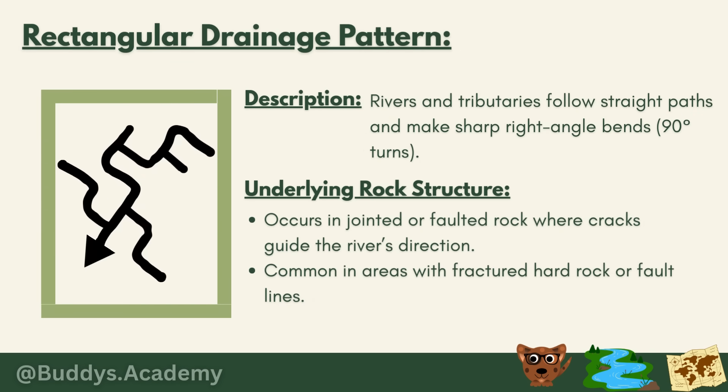The second drainage pattern is the rectangular drainage pattern. Rivers and tributaries follow straight paths and make sharp right-angle bends — 90-degree turns. It occurs in jointed or faulted rock where cracks guide the river's direction, common in areas with fractured hard rock or fault lines, forming on igneous rocks as well as horizontal sedimentary rocks with many joints. Joints are natural lines or breaks in solid rock, formed by pressure, cooling, or drying of rock — and unlike faults, joints don't involve movement, they are just cracks.